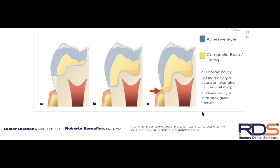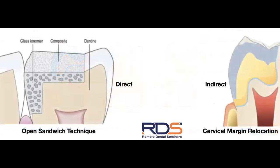Rubber dam isolation is so critical here because you're working in an area with crevicular fluid and likely gingival inflammation from plaque around the defective restoration. The tissue will be puffy, red, and prone to bleeding. Rubber dam isolation is the line between indication and contraindication — if you cannot isolate a tooth with rubber dam to do margin elevation, this treatment modality is contraindicated for that patient.